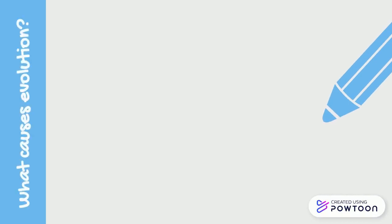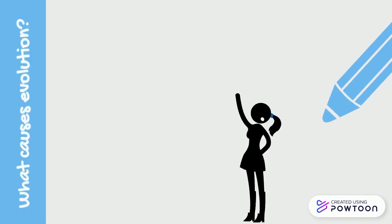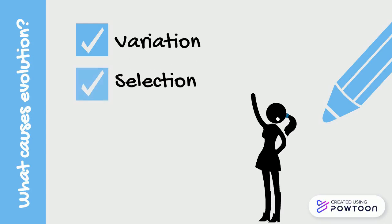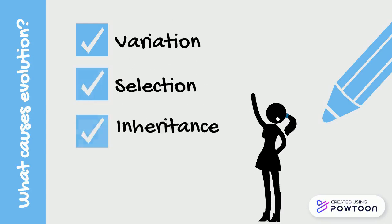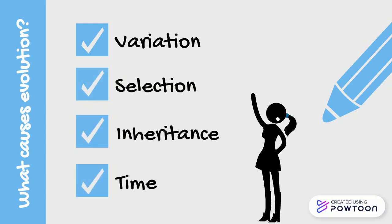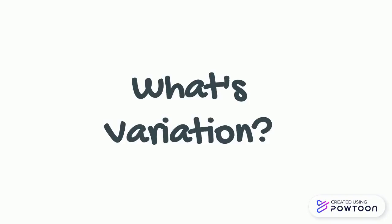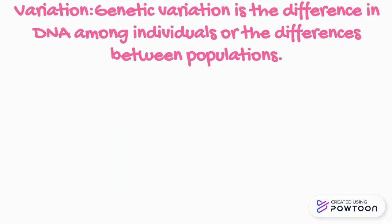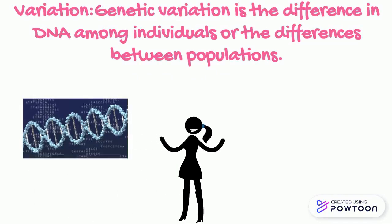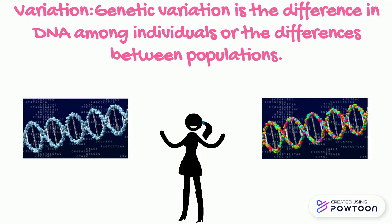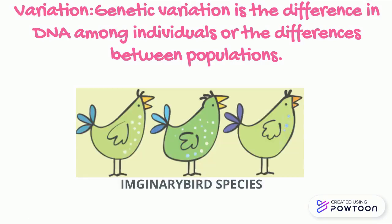In order for evolution to occur, there are four main things that need to happen: variation, selection, inheritance, and time. Let's start off by talking about variation. Genetic variation is the difference in DNA among individuals or the differences between populations. Here, you can see that these are all birds of the same species, but look slightly different.